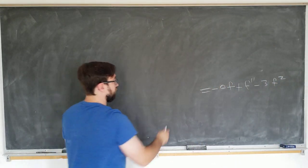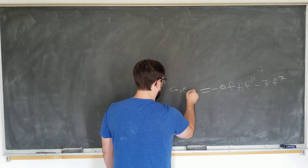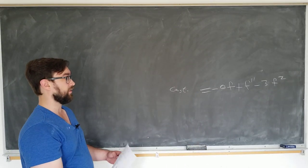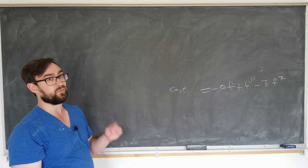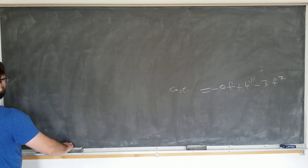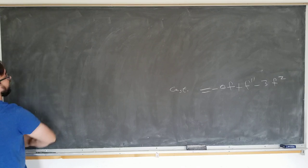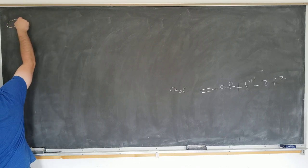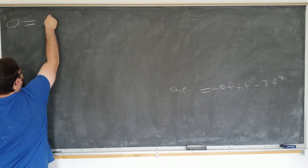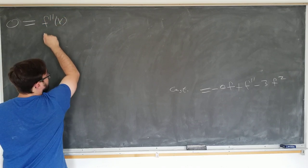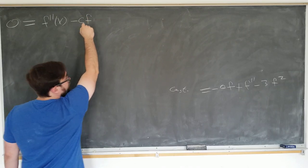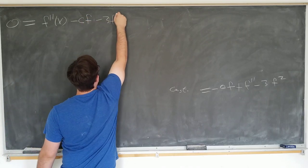In this video, all the integration constants are going to be zero because we don't want all the solutions, we just want a particular solution. We only want one. So if we want to, we can let them be zero. The equation we'll be solving in this video is zero is equal to f double prime of capital X minus cf minus 3f squared.